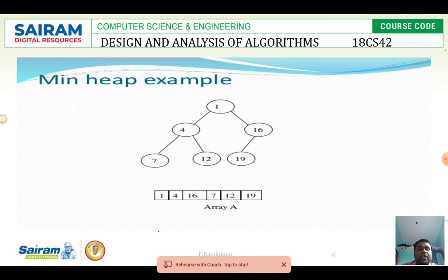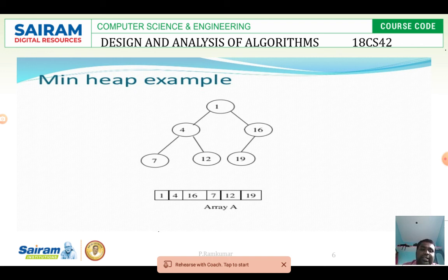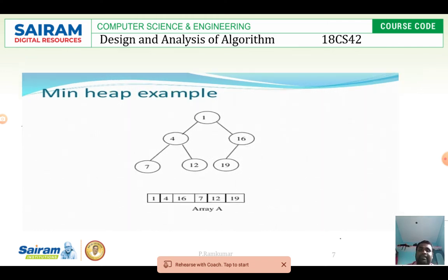Now for min heap — in each and every level of a tree, the internal node has a smaller value than its children. Look at the bottom level: 7 and 12, whose parent node is 4. Since 4 is less than both 7 and 12, that is satisfied. On the rightmost part, 19's parent is 16, and 16 is less than 19 — fulfilling the norms of the min heap. Next, consider 4 and 16: their parent is 1. Since 1 is less than 4 and 16, it fulfills the meaning of min heap.